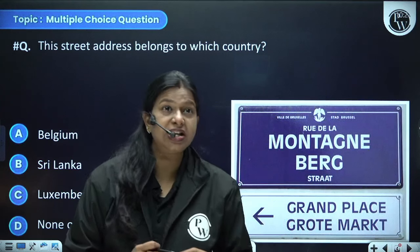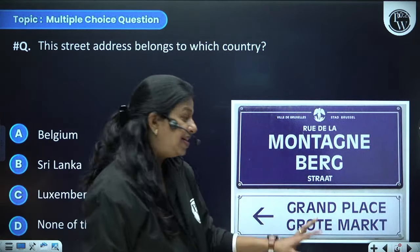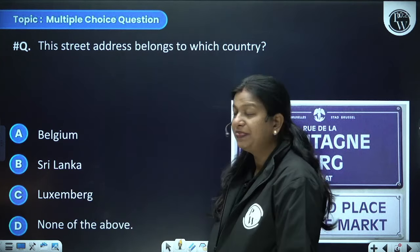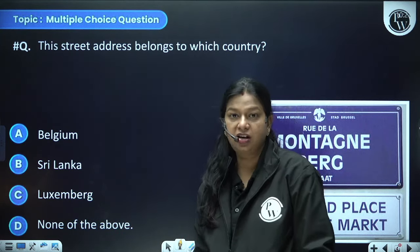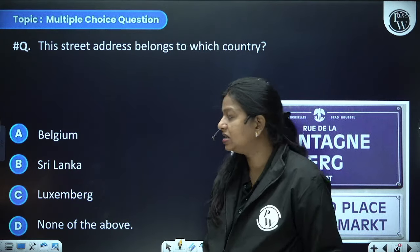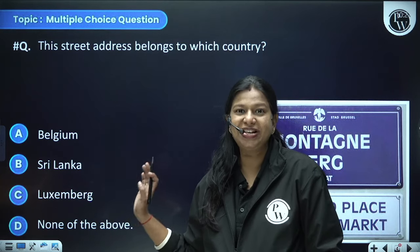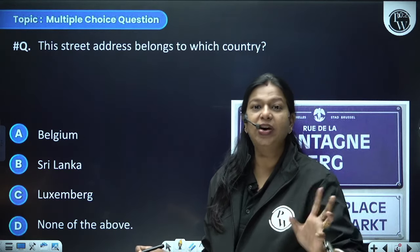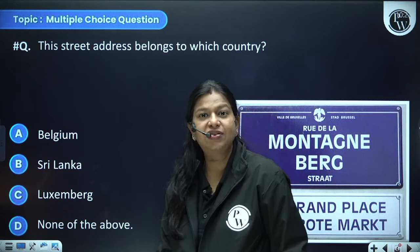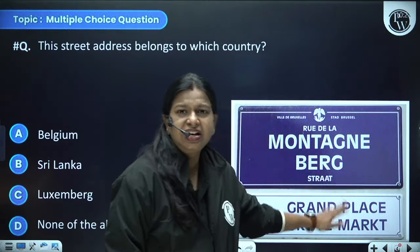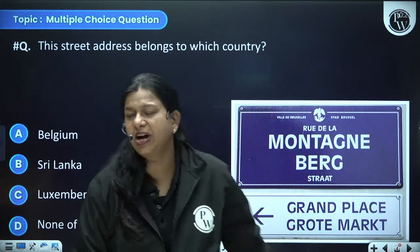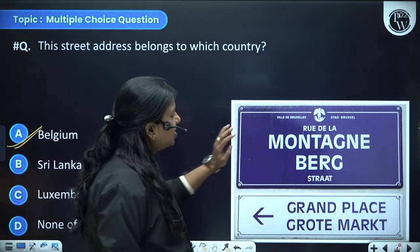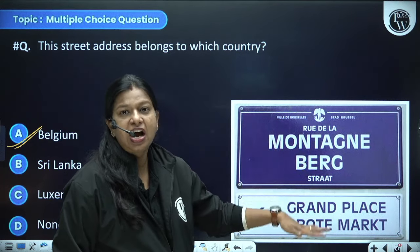This street address belongs to which country? It is written in two sets of plates in two different languages — options are Belgium, Sri Lanka, Luxembourg, and none of the above. Luxembourg and none of the above can be eliminated easily. The doubt is between Belgium and Sri Lanka. In Sri Lanka, languages were Sinhala and Tamil, and we don't see Tamil script here. So by elimination, the answer is Belgium — half written in Dutch and half in French.